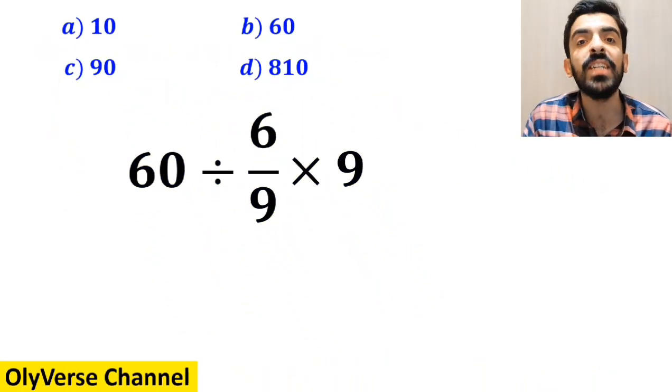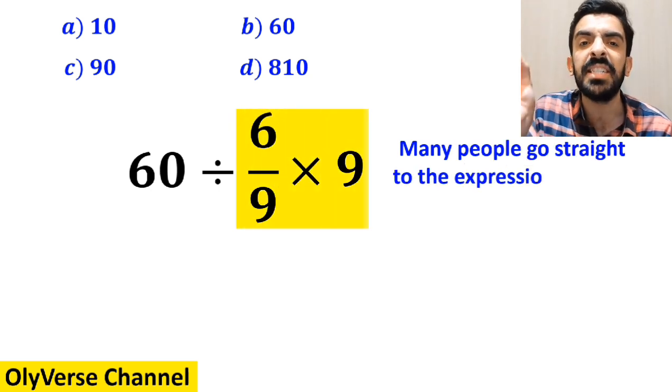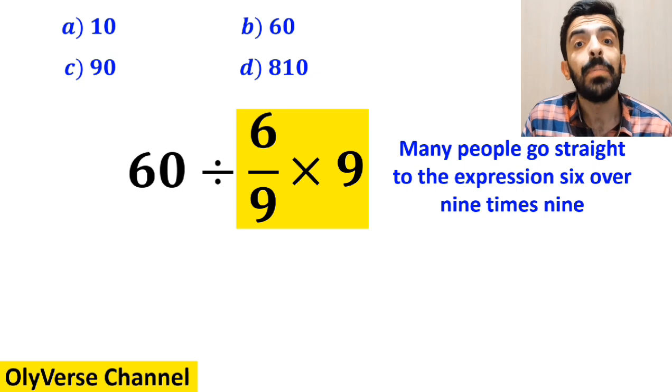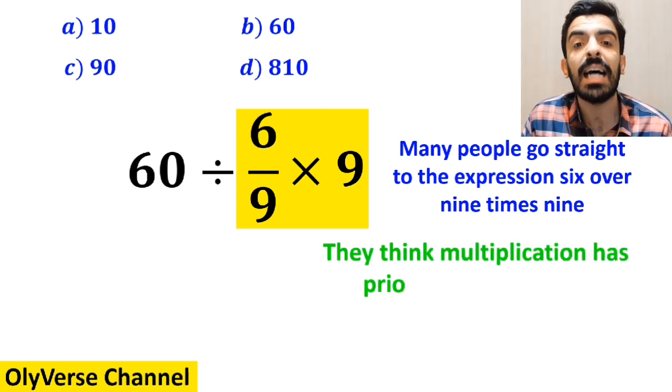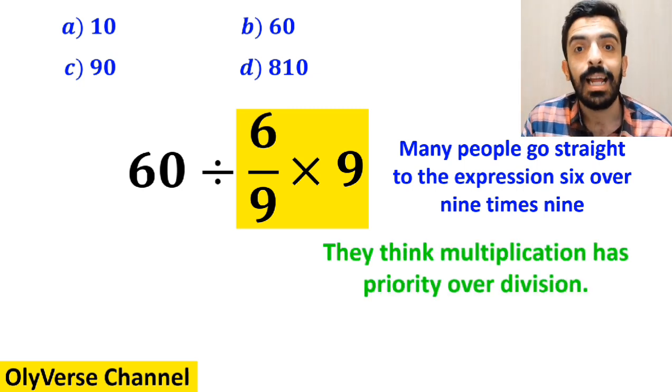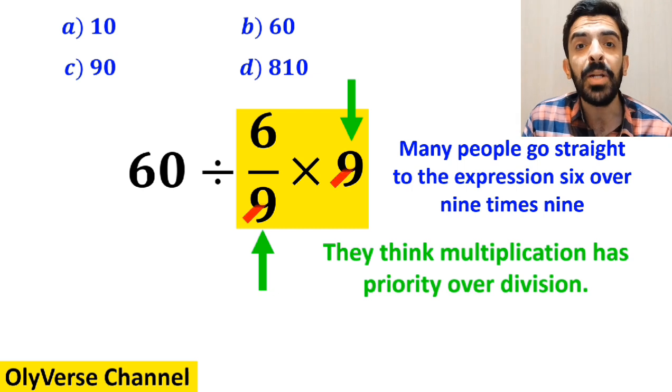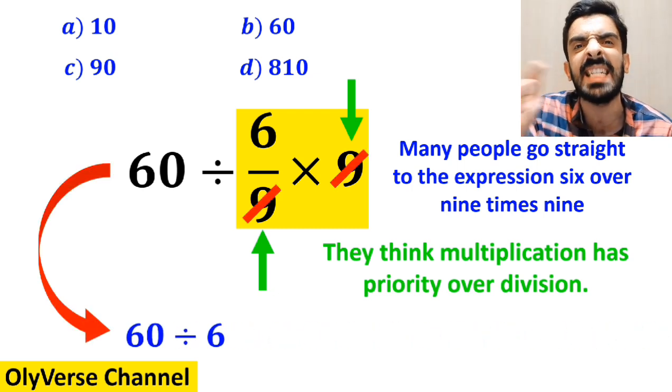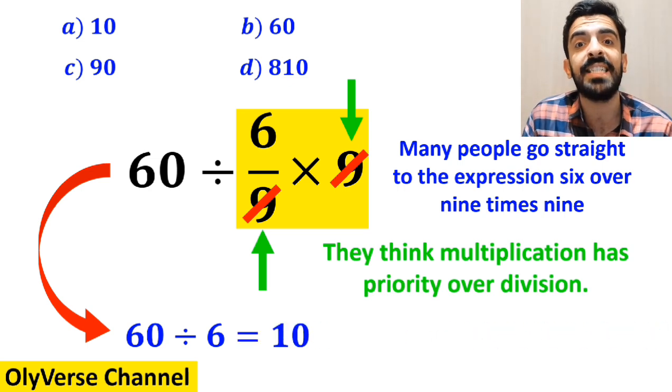At the beginning of solving this question, many people go straight to the expression 6 over 9 times 9, which I have highlighted in yellow, because they think multiplication has priority over division. And they say it's easy to simplify the 9 with the 9 in the denominator, and rewrite this expression as 60 divided by 6, which finally gives them the answer 10.